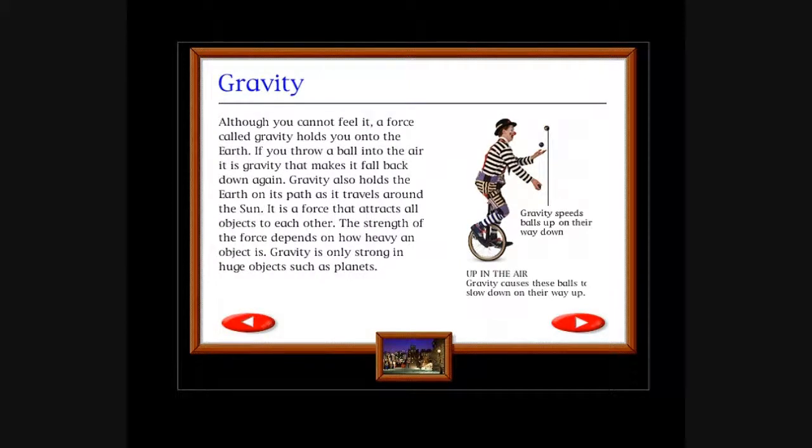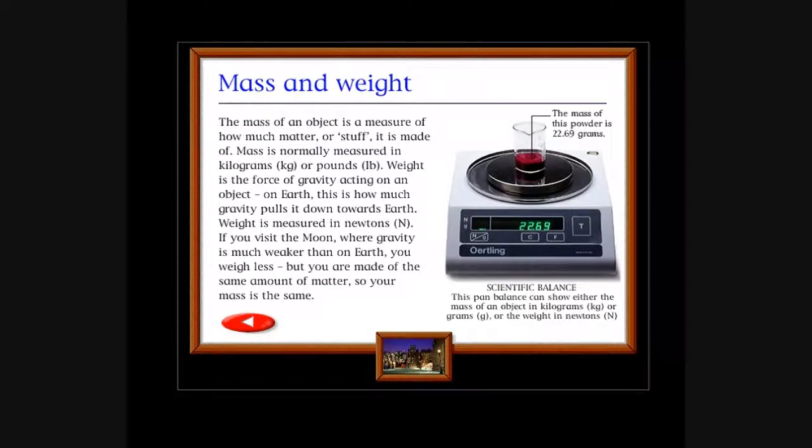Gravity: Although you cannot feel it, a force called gravity holds you onto the earth. If you throw a ball into the air, it is gravity that makes it fall back down again. Gravity holds the earth on its path as it travels around the sun. It is a force that attracts all objects to each other. The strength of the force depends on how heavy an object is. Gravity is only strong in huge objects such as planets. Gravity speeds balls up on their way down. Up in the air, gravity causes these balls to slow down on their way up.